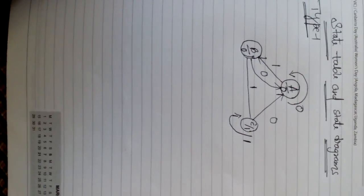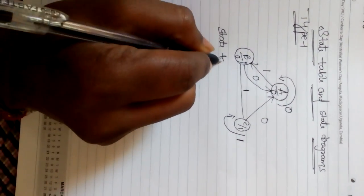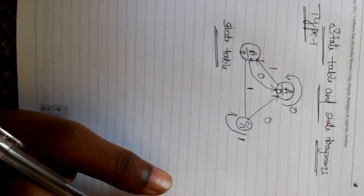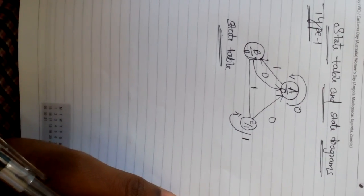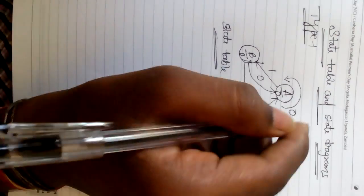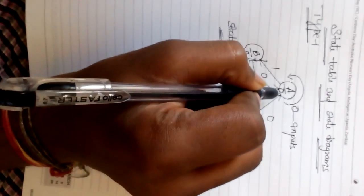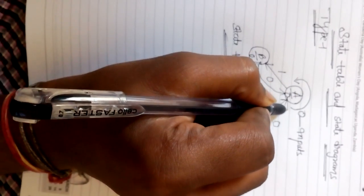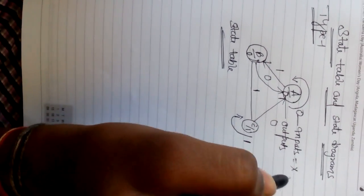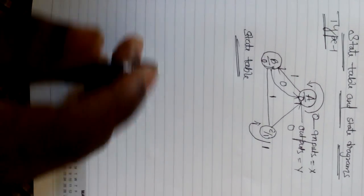Now we are going to draw the state table for the state diagram. The inputs are outside the table, and the alphabets under each state represent the outputs. Let's assume inputs as X and outputs as Y. The states are A, B, and C.